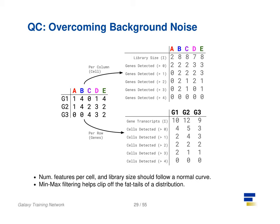The first row of the top table defines the library size, which is the total number of messenger RNAs across all genes in each cell. The subsequent rows are the thresholds of gene detectability, displaying how many genes are detected in each cell for genes greater than the threshold amounts of 0 to 4. We see that even a threshold of greater than three transcripts detected in a given cell still keeps three cells in the analysis: B, C, and D.